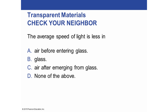Is the average speed of light less in air before entering glass, less in glass, less in air after emerging from glass, or none of the above? The answer is in glass. Before entering and after exiting the glass, the speed of light is the same. It only slows down while it is within the glass.